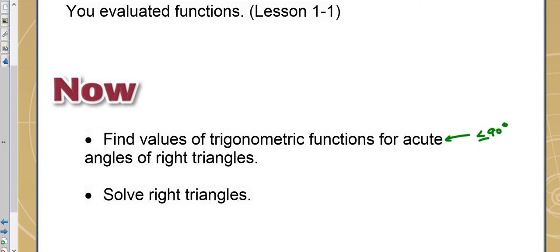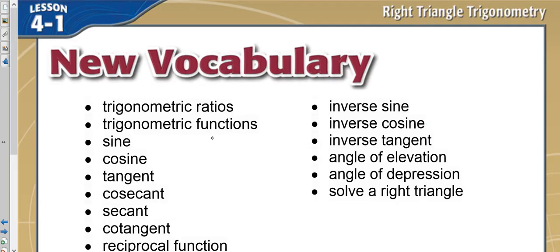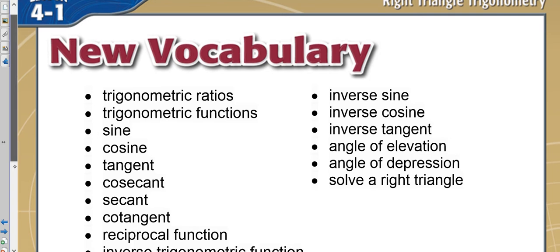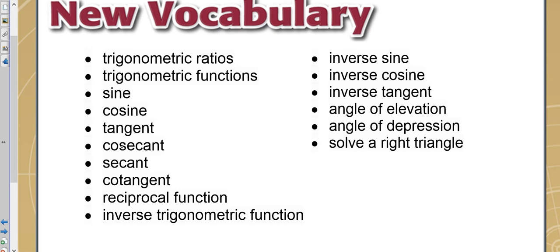And we'll solve right triangles from that. So we're going to be using trigonometric ratios to solve these. You probably remember these as sine, cosine, and tangent. Well, there's also three reciprocal values. That's cosecant, secant, and cotangent.